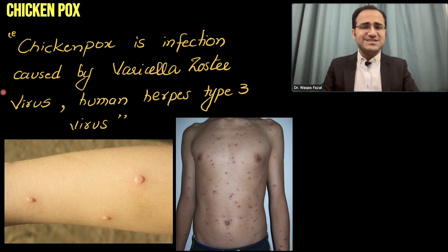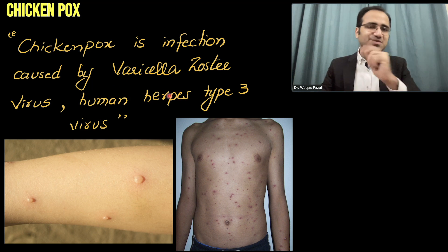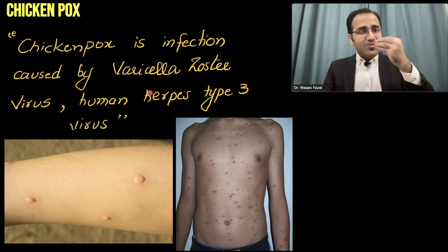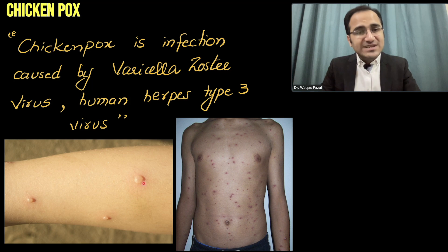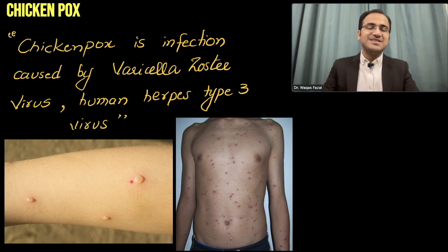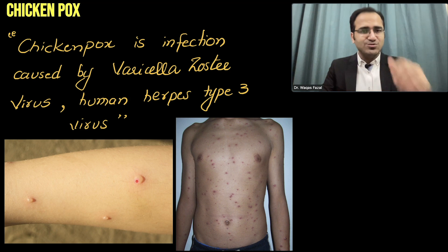First of all, what is chickenpox? Chickenpox is an infection caused by varicella zoster virus. Varicella zoster virus is basically a type of human herpes virus. It is transmitted through droplets, through the respiratory route, and it results in formation of vesicles. These vesicles erupt and there is crusting and scab formation and resolution.